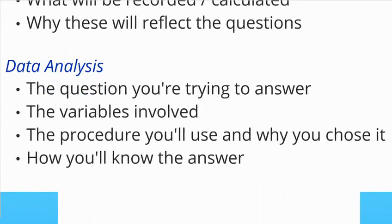For the data analysis, four things have to be there: the question you're trying to answer, the variables involved, the procedure you use and why you chose it, and how you know what the answer is to your question. You can lump several things together — for example, saying all continuous variables were compared using a t-test — but this information has to be somewhere in your research proposal, preferably in the data analysis section.